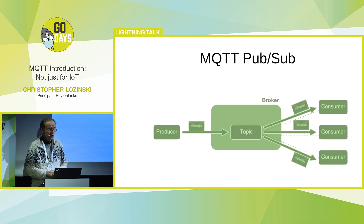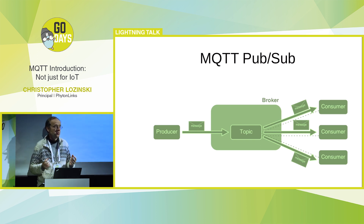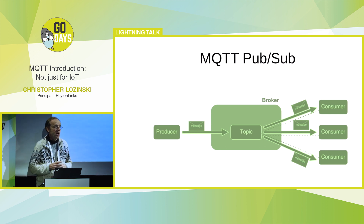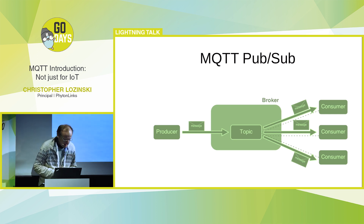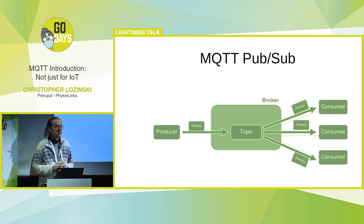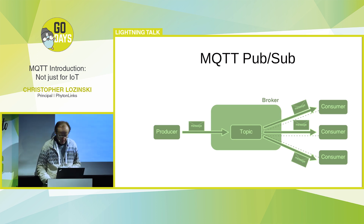Here's the basic idea. You have a broker, and inside the broker there are some topics. You have some clients who connect to the broker, and they can either subscribe to a topic — there's a tree of topics — or they can publish to a topic. On the left-hand side, we have a publisher. He sends a message to a topic, and it gets re-sent to the people who have subscribed to those topics.